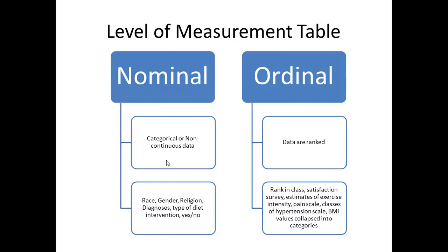Examples of nominal level data — also known as non-continuous — are gender, race, geographic location, religion, diagnosis, etc. Descriptive statistics are limited to number and percent, which is also referred to as mode. There is no mean, median, range, or standard deviation. Non-parametric tests like chi-square can be used to check for differences between groups.